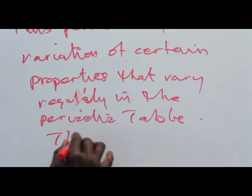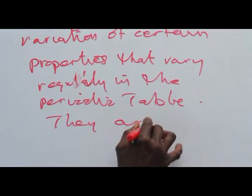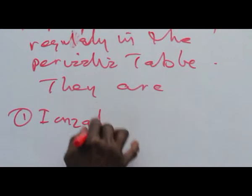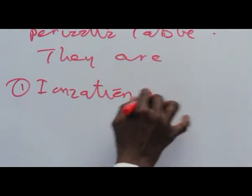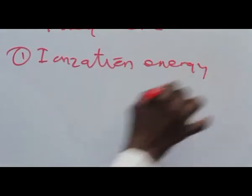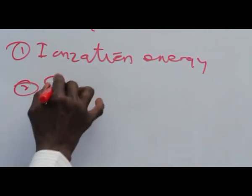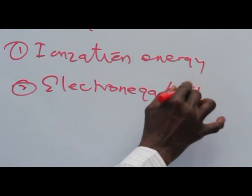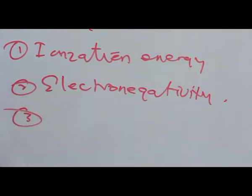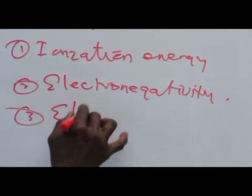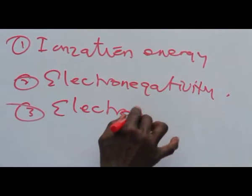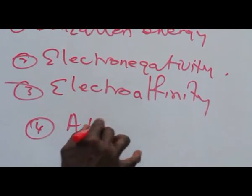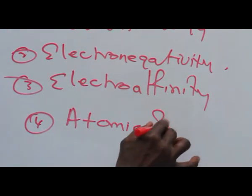There are: one, ionization energy; two, electronegativity; three, electron affinity; and four, atomic sizes.